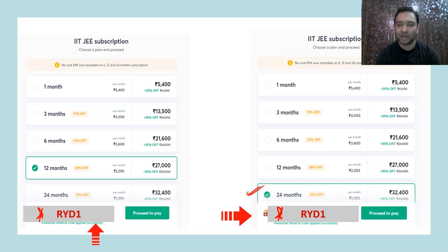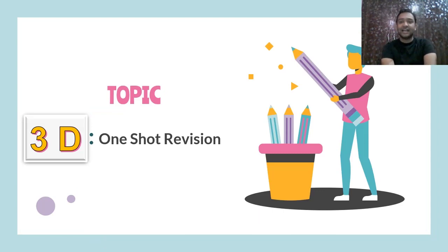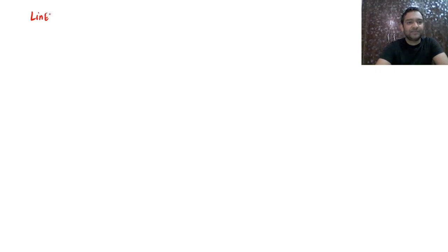Subscribe for an academy's IIT-JEE course. So now let's move on. Today our topic is 3D — we will try to do a one-shot revision of the full chapter of Vectors and 3D, specifically the second part which is 3D. Let's start without any delay. The first topic that comes in 3D is Lines. We need to first write the equation of a line.